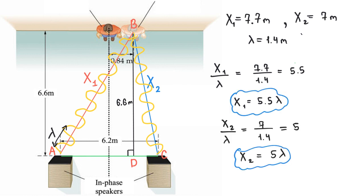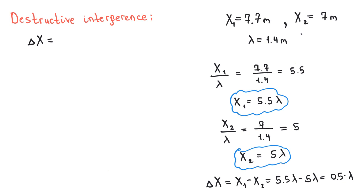What is the difference between x1 and x2? 5.5 wavelengths minus 5 wavelengths gives us half of a wavelength. By definition, if the difference is equal to odd number of half wavelengths, i.e. the difference is equal to lambda over 2 or 3 lambda over 2 or 5 lambda over 2, and so on, we observe destructive interference at the given point.